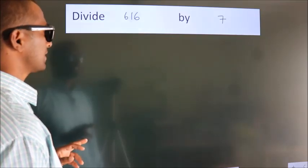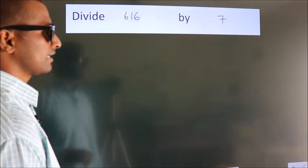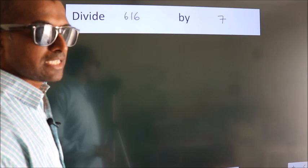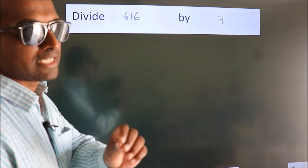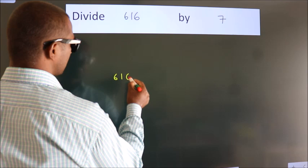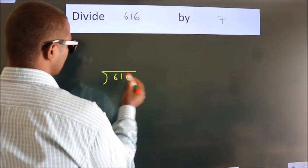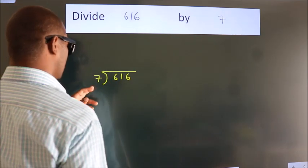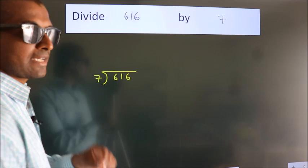Divide 616 by 7. To do this division, we should frame it in this way: 616 here, 7 here. This is your step 1.